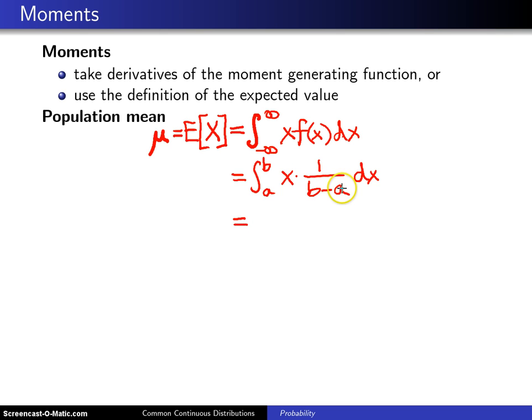Now the 1 over b minus a is just a constant. So when we integrate x, we get x squared divided by 2, and that will be evaluated from a to b.